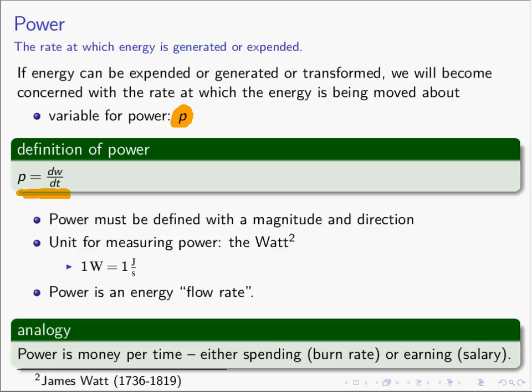A watt is a joule per second. A joule is an amount of energy, seconds is an amount of time, so a watt is an energy flow rate. For our analogy, if energy is money, then power is simply money per time — how much money you're spending or earning in a given amount of time. In contract accounting, the spending rate is called the burn rate: for example, $1,000 per day. Or an earning rate — a salary is an earning rate, like $60,000 per year. Burn rate or salary are like powers.